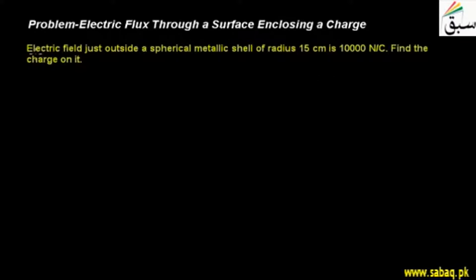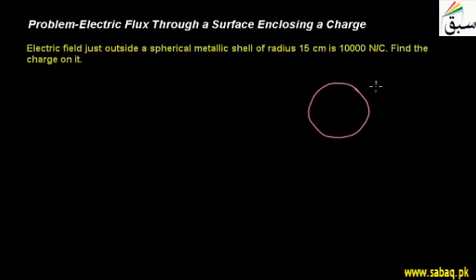What is our problem? The electric field just outside a spherical metallic shell of radius 15 cm is 10,000 Newton per coulomb. If I put a point charge here, the intensity of the electric field will be 10,000 Newton per coulomb. The radius is 15 cm, which I denote as R.